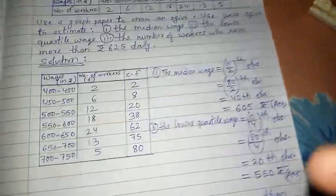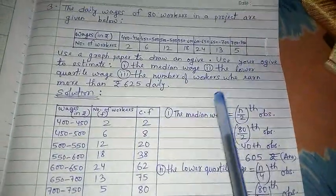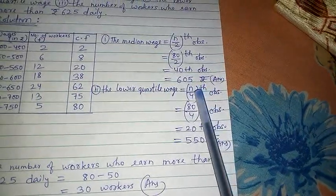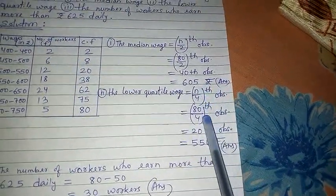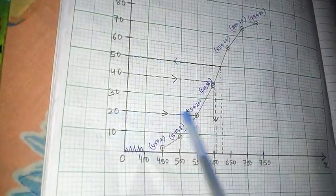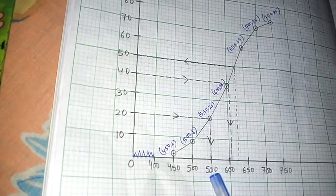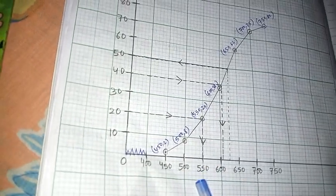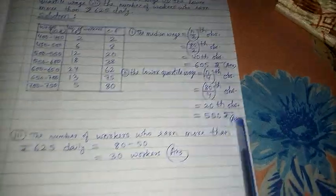Next, the second question is the lower quartile. Lower quartile formula is n by 4 th term. 80 by 4, that is the 20th observation. 20th observation, you go here is 20. 20th observation and fold it down. Exactly falling at 550. Very easy to judge, so 550.